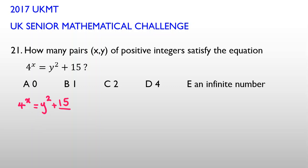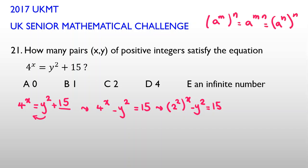Let's consider this number here and take this to the left hand side. Then I have 4^x - y^2 = 15. But 4 is 2^2, so (2^2)^x - y^2 = 15. By the power rule, I know that (a^m)^n = a^(mn) = (a^n)^m, so you can switch the place of m and n. So I can rewrite this as (2^x)^2 - y^2 = 15.